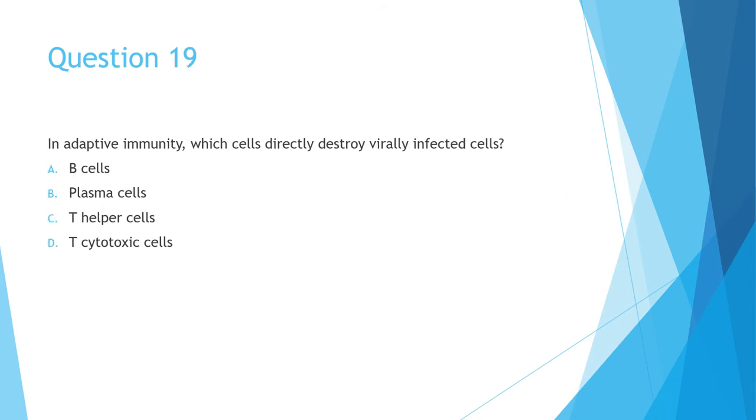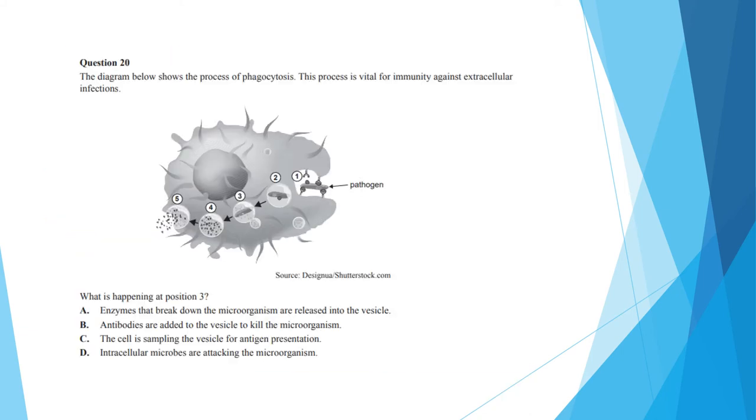Question 19 is another straightforward knowledge recall question. Which cell destroys virally infected cells in adaptive immunity? And the answer here is C cytotoxic cells. If you're still in the process of revising for biology, make sure you know what each of these cells do. Question 20 shows a diagram of phagocytosis. It asks you what is happening in position 3. And the correct answer here is option B. Options A and C are incorrect because the content of the vesicle that breaks down the microorganism is incorrect. It is neither antibodies nor intracellular microbes. Antibodies are circulating proteins that bind to foreign substances in the body. And intracellular microbes are generally pathogens.